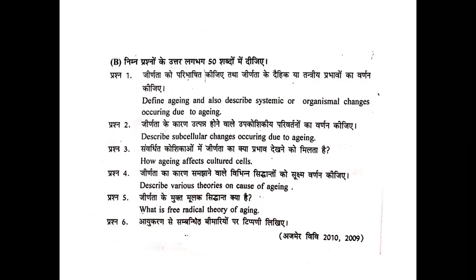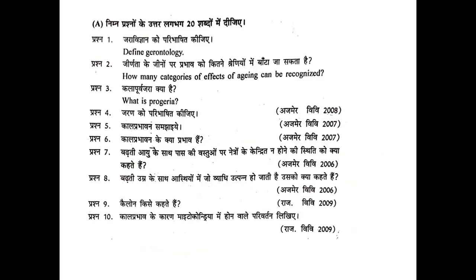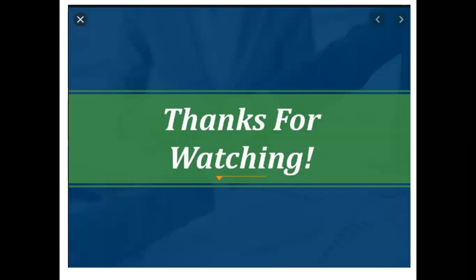These are all the topics covered: defining aging, describing somatic and organelle changes due to aging, how aging affects cultural cells, and what is the free radical theory of aging. These are the important questions I have completed in these five lectures. So what is progeria? You will do all these exercises in a good way - write them in a copy. If you do all these exercises, you will learn the whole chapter. It was a very long chapter - Genetics and Aging is a very big chapter which we have completed in five lectures. Thank you for watching, we will see you in a new chapter.